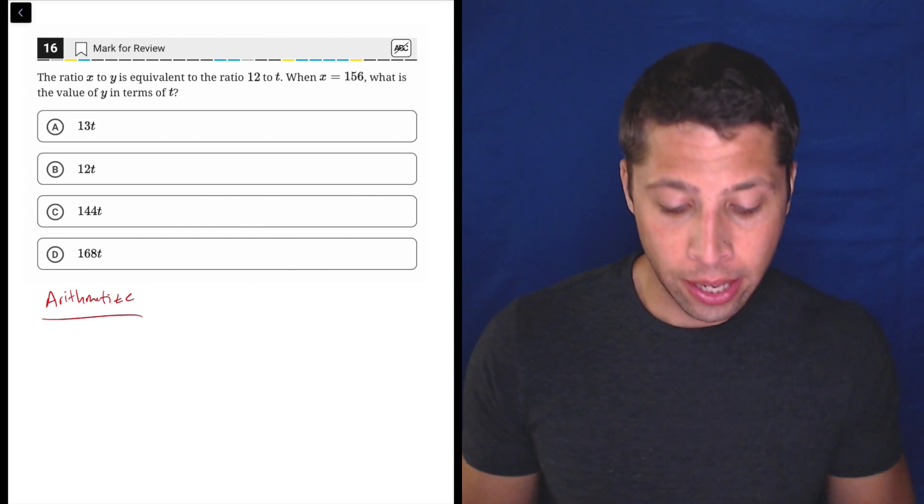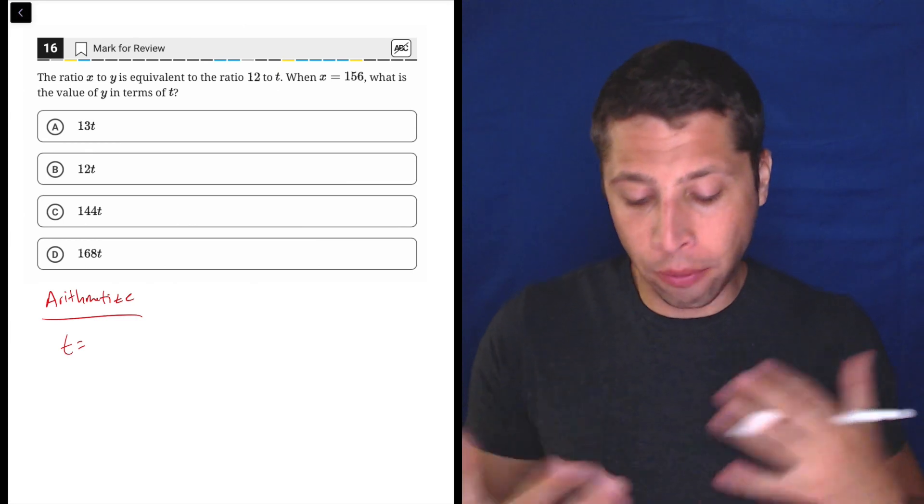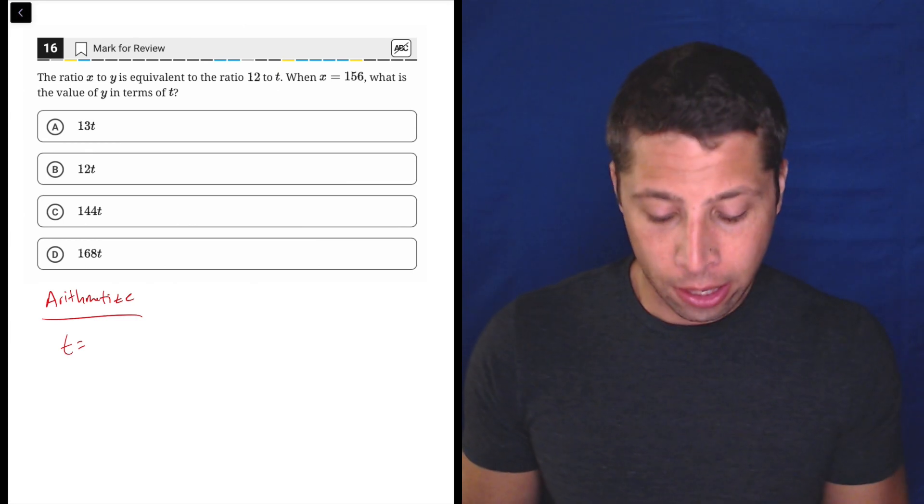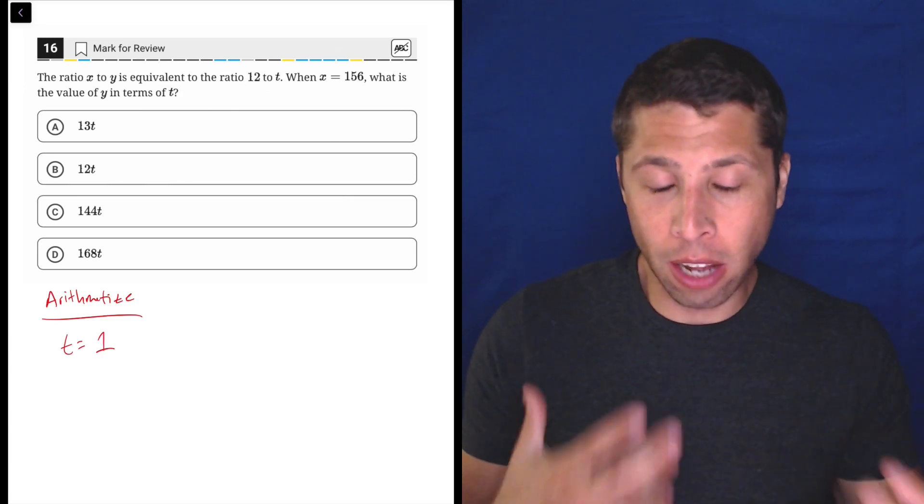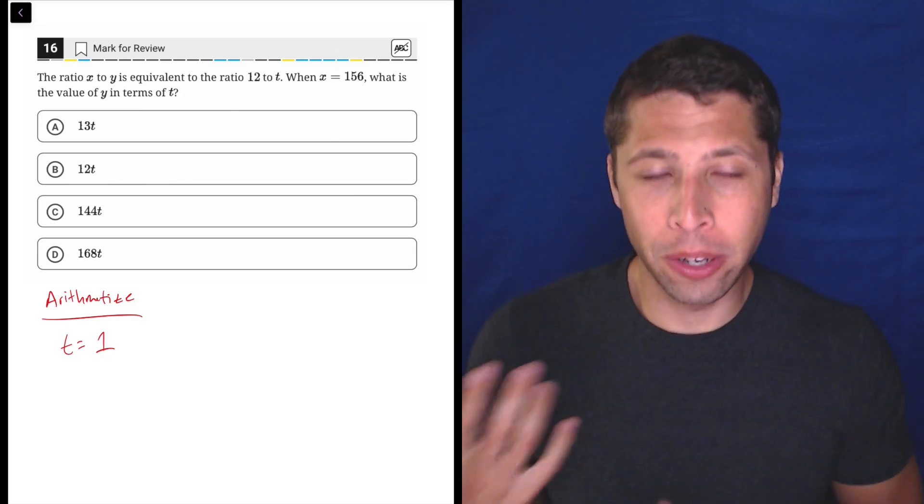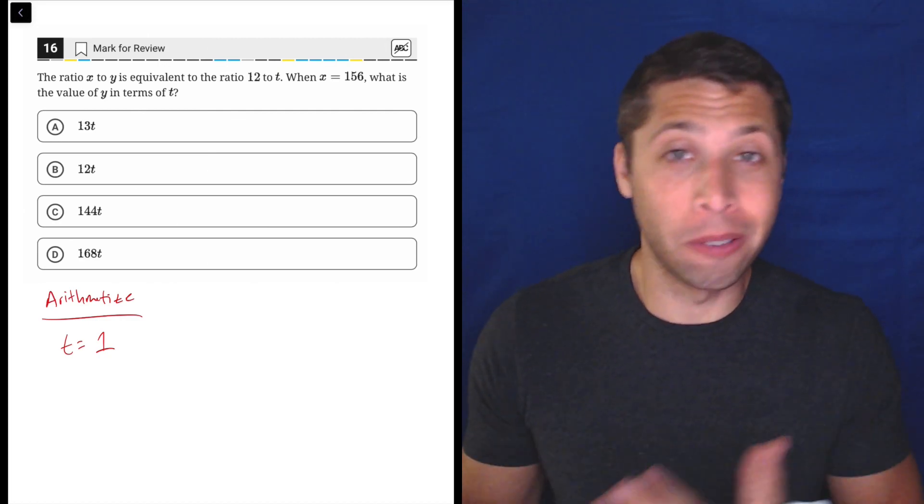What we want to do here is we see that t does not matter. Every choice is just multiplied by t. So I would make t equal to one, just picking a random number so that I can understand this ratio in a more intuitive way, and then I can hopefully just solve it in a more natural way.